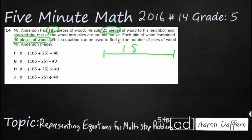I'm going to take my total here. I've got 185 pieces. I know this is the total because it says he has 185, and then he's getting rid of it — he's doing other things with it. I'm going to keep a running equation over here so we can track what he's got left.